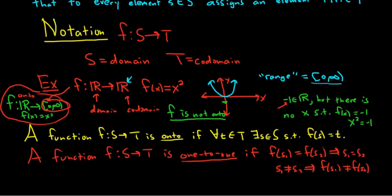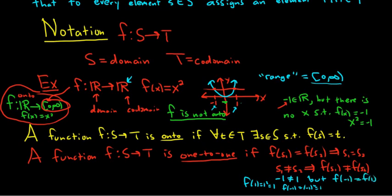In our example, our function is not one-to-one. Here's why: if I draw a horizontal line that crosses the graph, say at y equals 1, it hits at x equals 1 and x equals negative 1. So we have negative 1 not equal to 1, but f of negative 1 equals negative 1 squared equals 1, and f of 1 equals 1 squared equals 1. So f of negative 1 equals f of 1, which violates the definition of one-to-one.